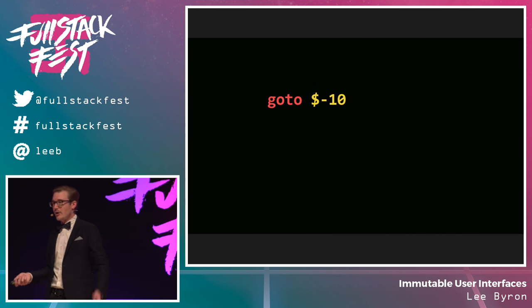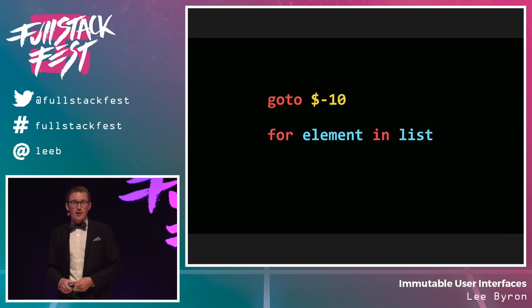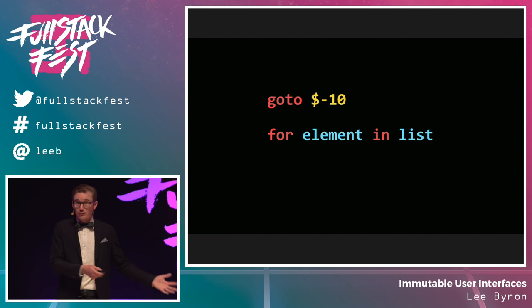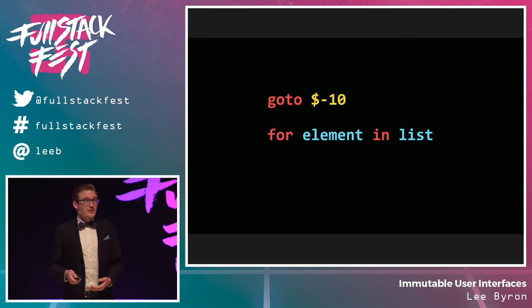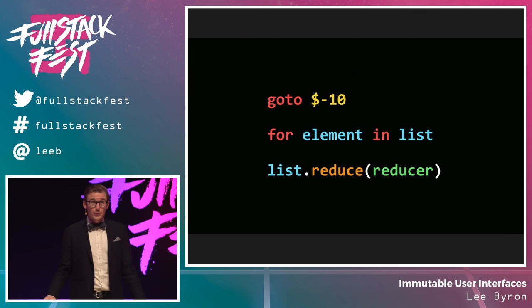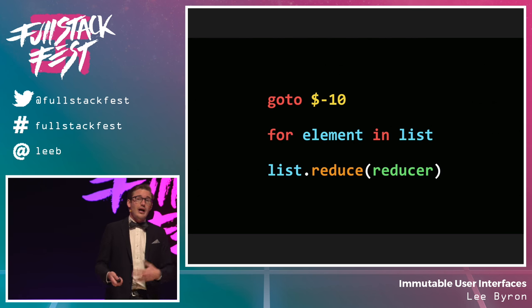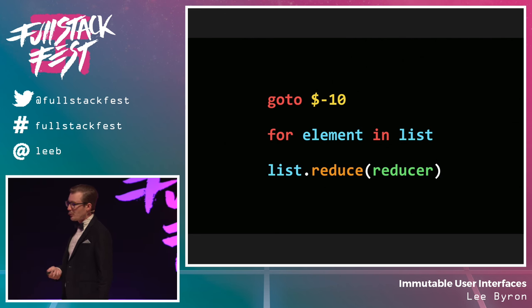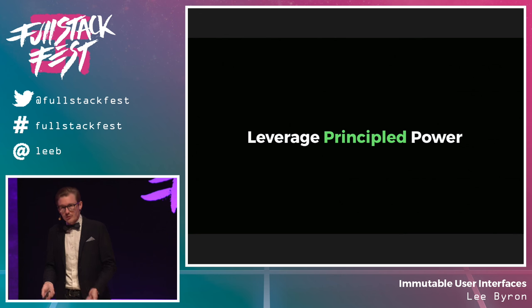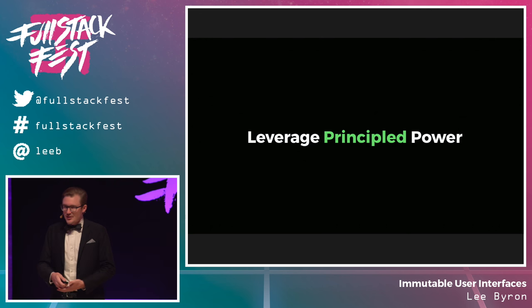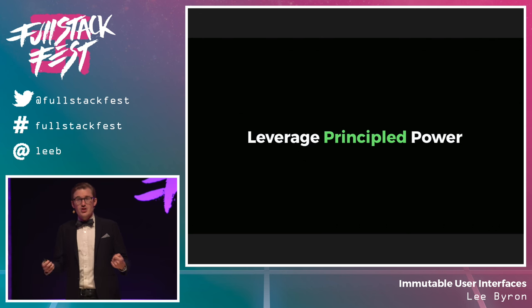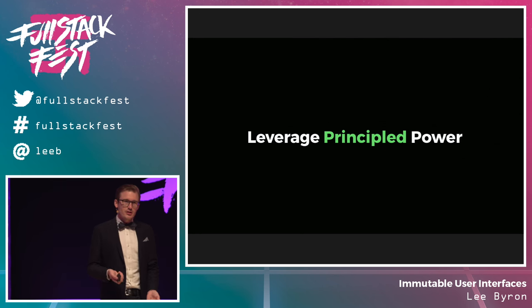Most modern languages have forgone GoTo in favor of for loops — you can't do everything with a for loop that you can do with GoTo, but the principles and constraints it provides let you guarantee things about what can and can't happen. Many modern languages even favor for loops over map, filter, reduce, and other higher-order functions. It's really not about the power of your software — it's about the principles you can leverage. Immutable data brings these guarantees, enabling techniques like memoization and time travel.